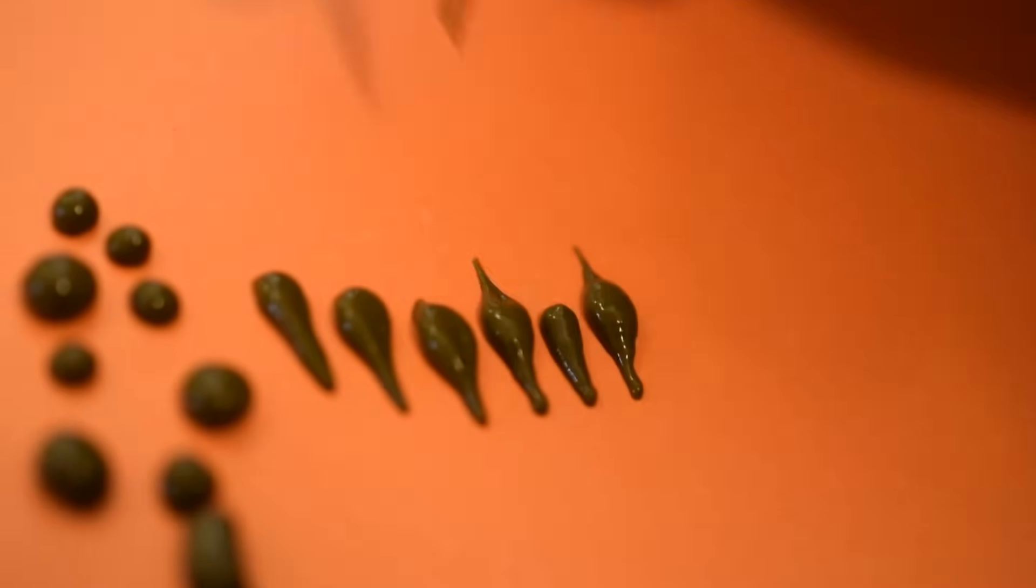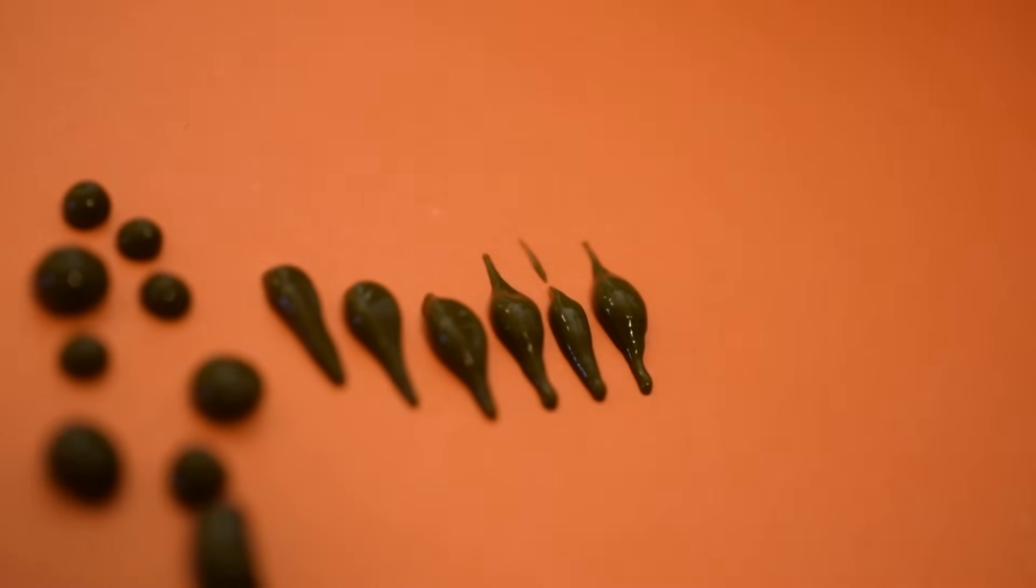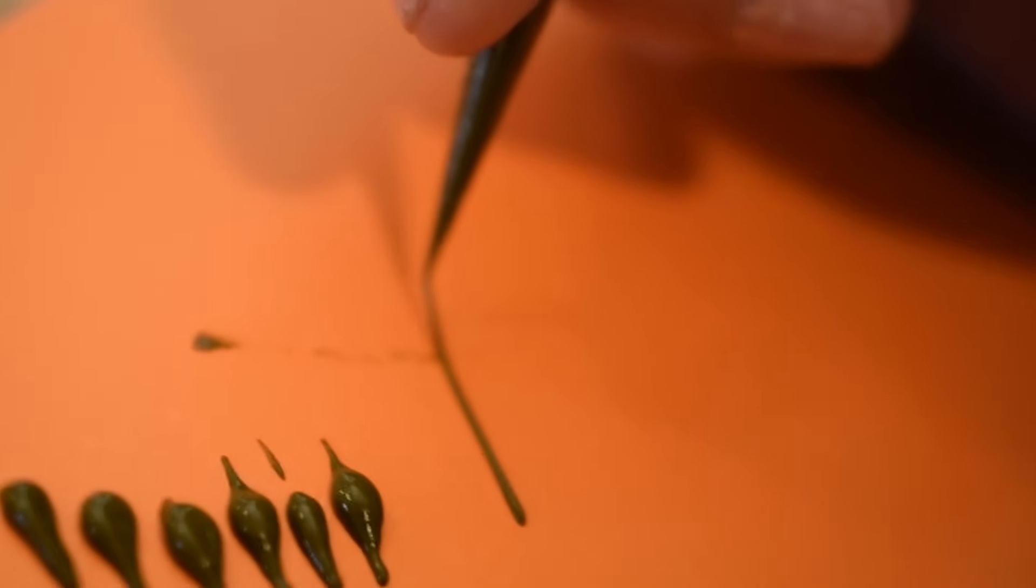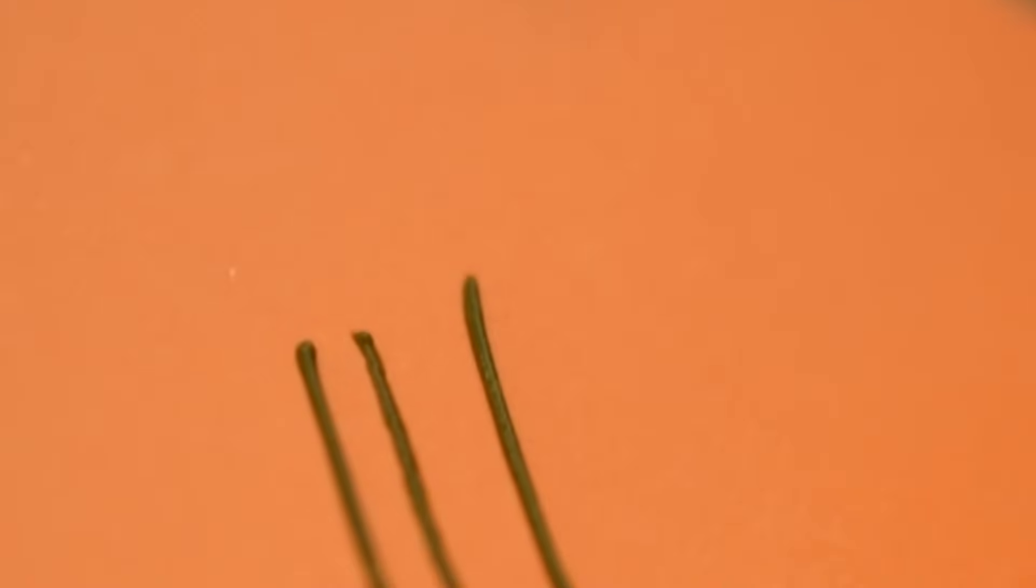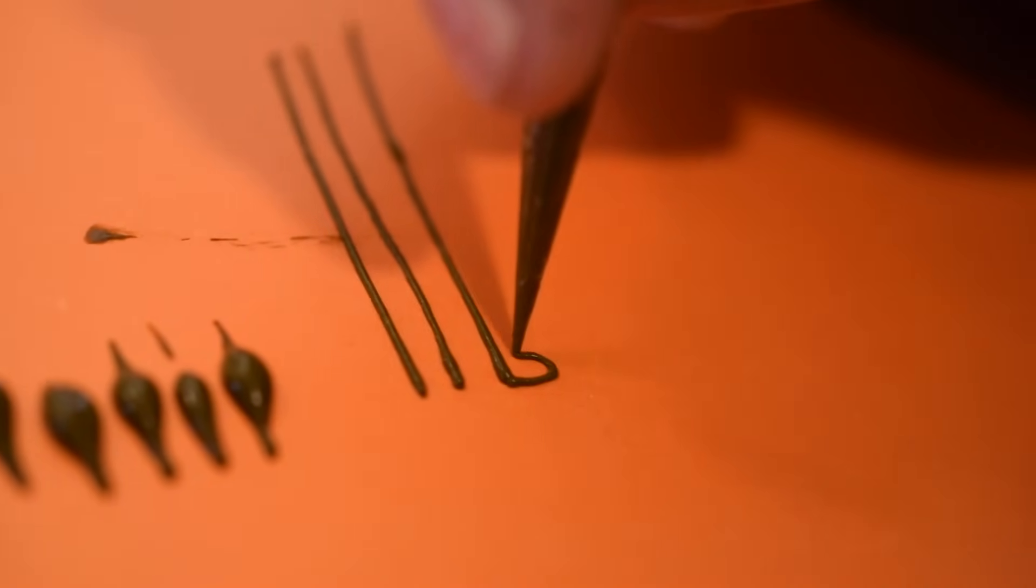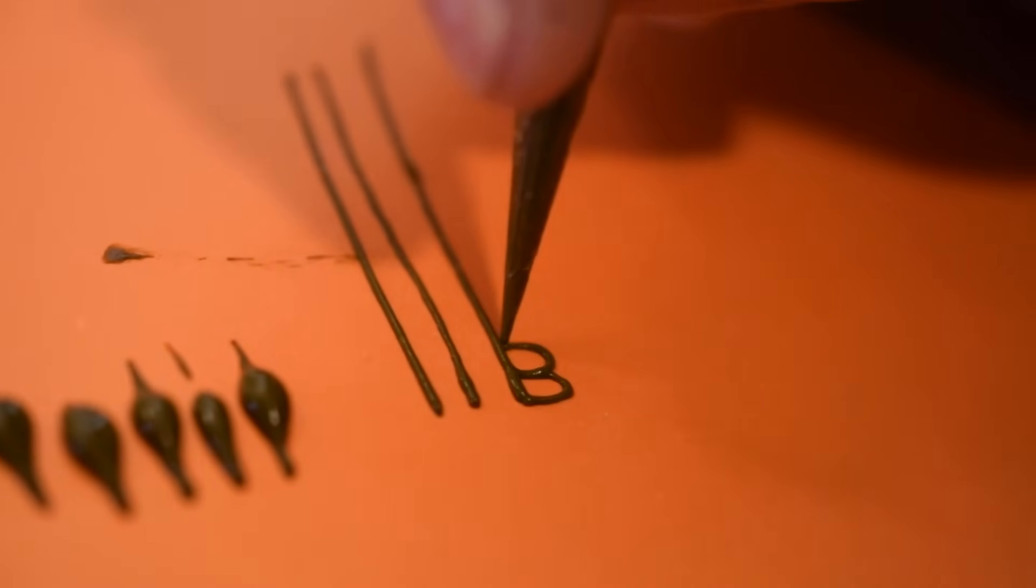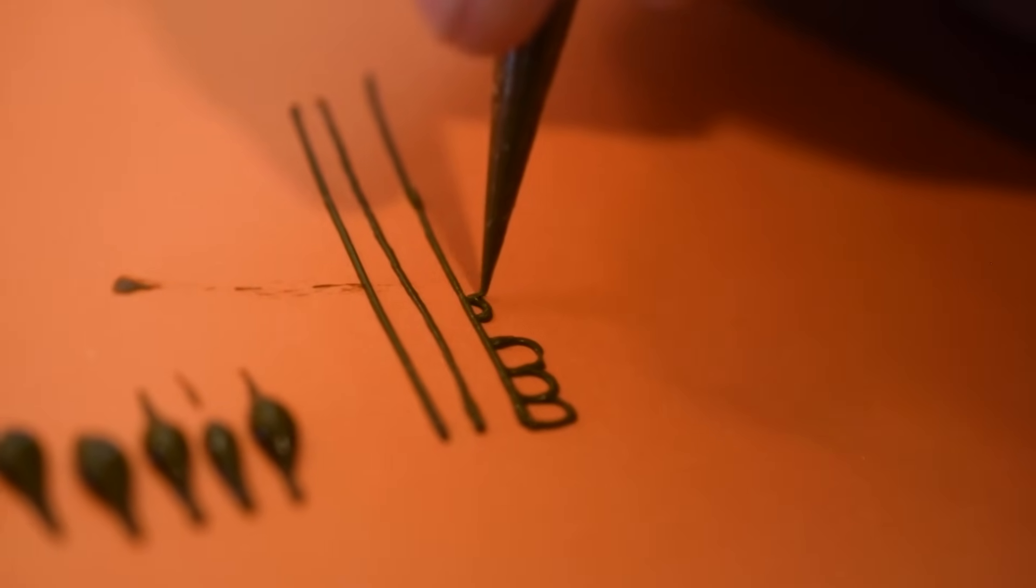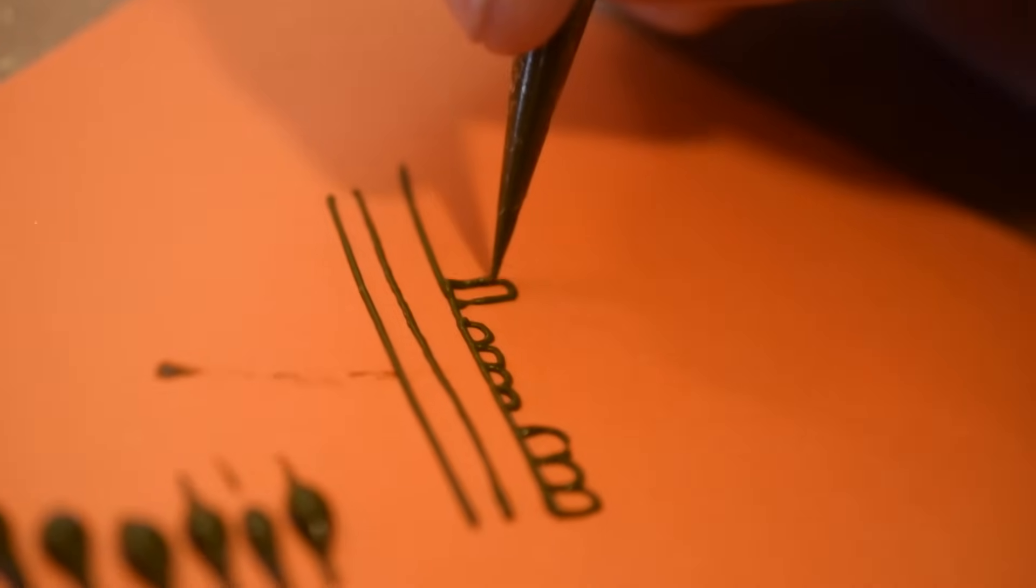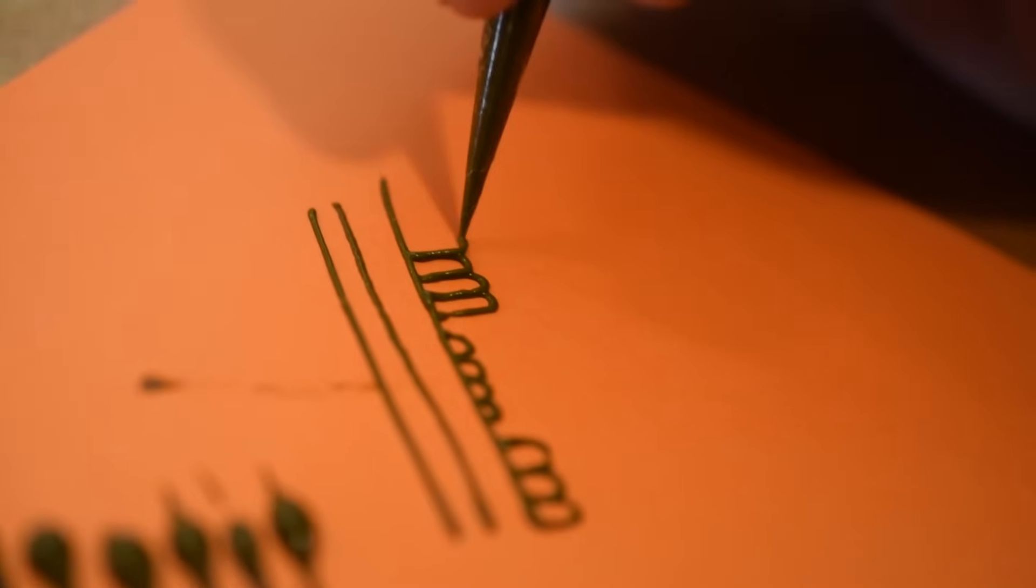Whenever you see a design, break it down into those elements and then spend some time practicing those elements. A line is as simple as just drawing a line in the air and then gravity is pulling that line down, this is called draping. Another one that you'll see everywhere are these little bumps, and these bumps can be fat, they can be thin, they can be tiny. If you want to do really tall skinny bumps, those are beautiful.